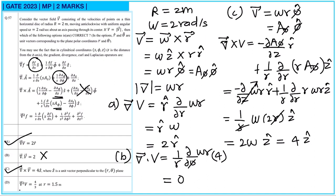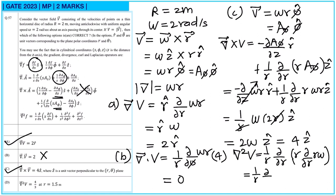For the Laplacian of v: considering the φ-component, ∇²v = (1/r)·∂/∂r(r·∂(ωr)/∂r) = (1/r)·∂/∂r(ωr) = (1/r)·ω = ω/r. With ω = 2 and evaluating, this gives 2/r, so with r contributing the result is 4/3, meaning option D is correct.